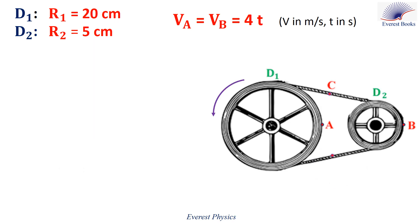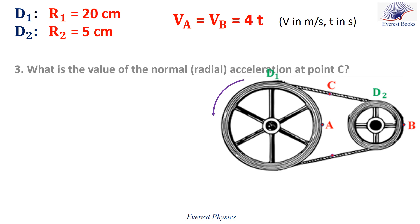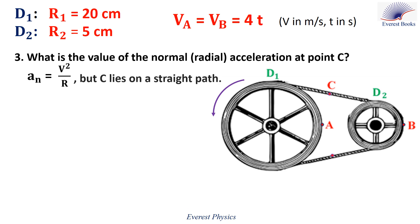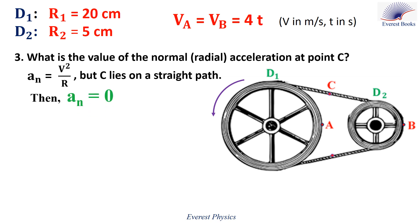Let's move to part 3. What is the value of the radial acceleration at point C? The normal acceleration, or the radial acceleration, is given by V squared over R. Point C lies on a straight path. At any point on a straight path, the radius of curvature goes to infinity. Then the normal acceleration at point C is 0.